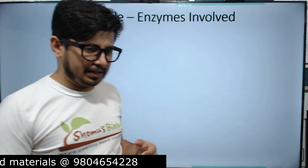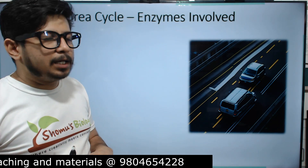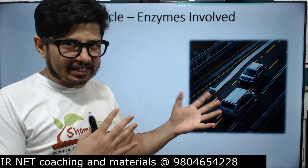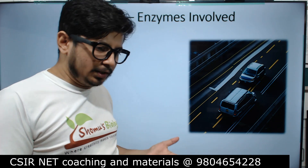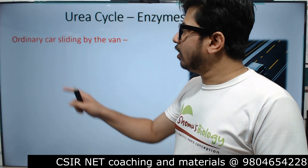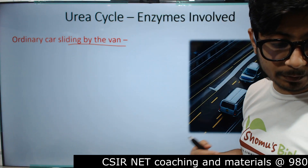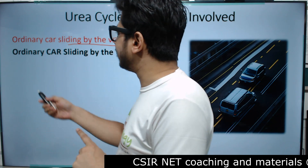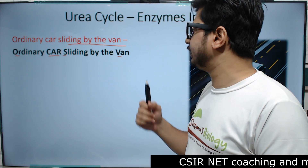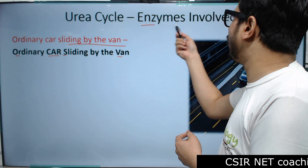The first thing I want you to focus on is this picture where we have a small car and a van — a bigger car. They are chasing around and passing by each other. The mnemonic sentence we want to form is: 'Ordinary Car Sliding By The Van.' All the capital letters represent different enzymes involved in the urea cycle.